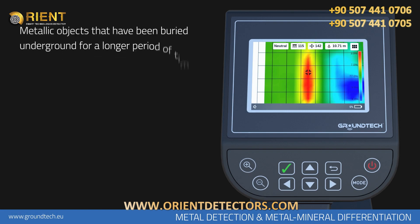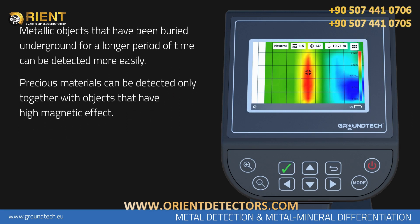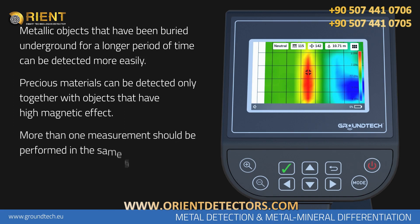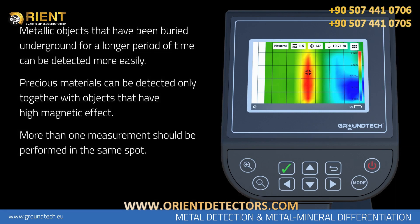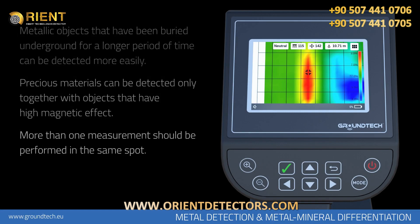Metallic objects that have been buried underground for a longer period of time can be detected more easily. Precious materials such as gold or silver can be detected only if they were buried together with objects that have high magnetic effect. In order to verify that the data represents a real object, more than one measurement should be performed in the same spot, and all of them should result similarly.